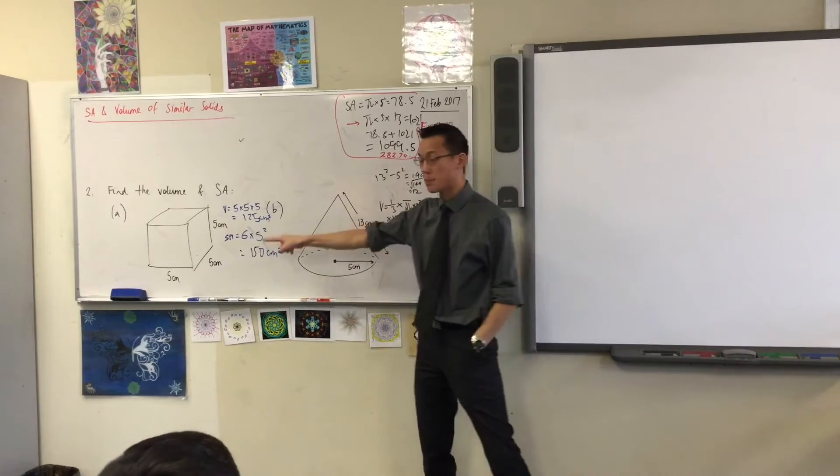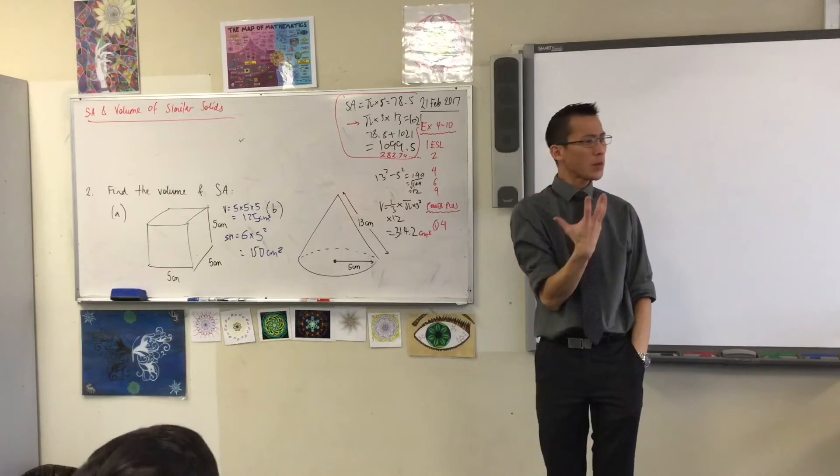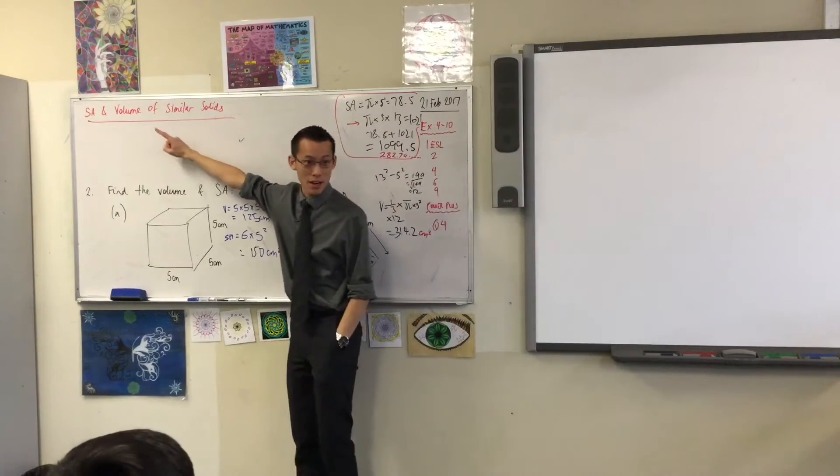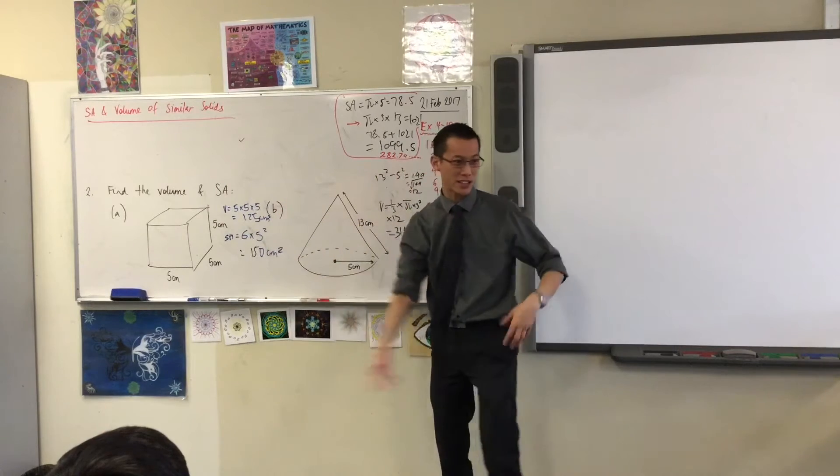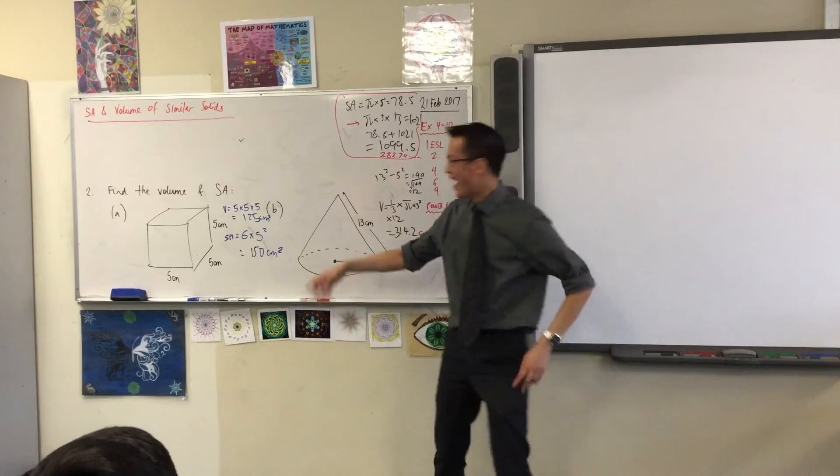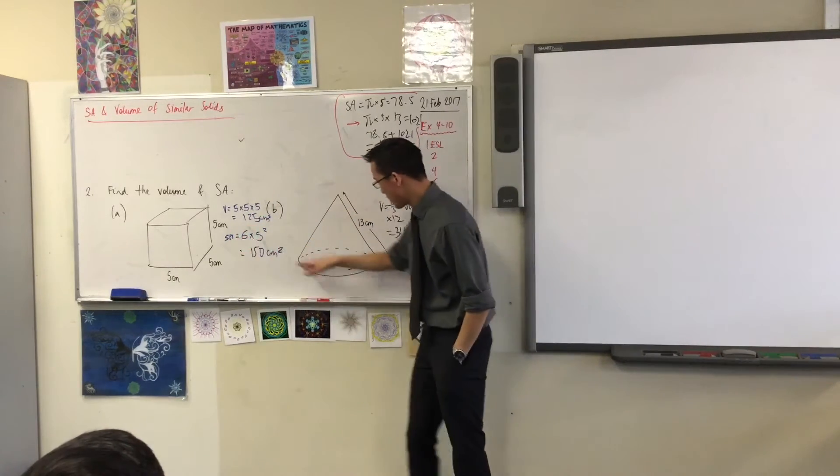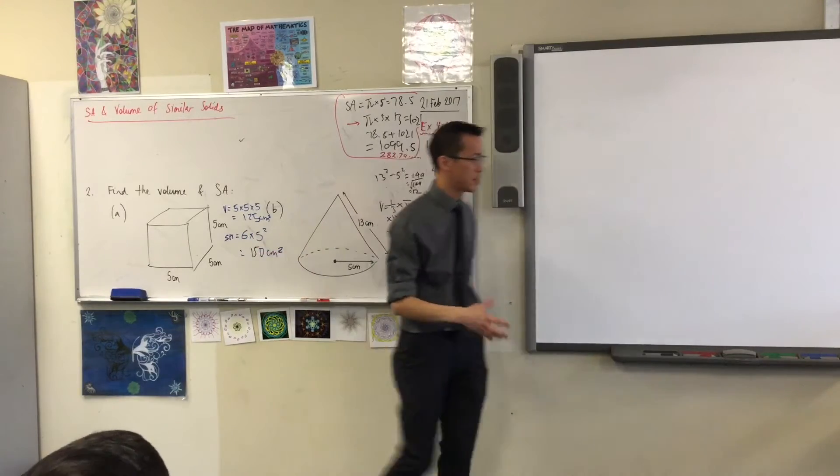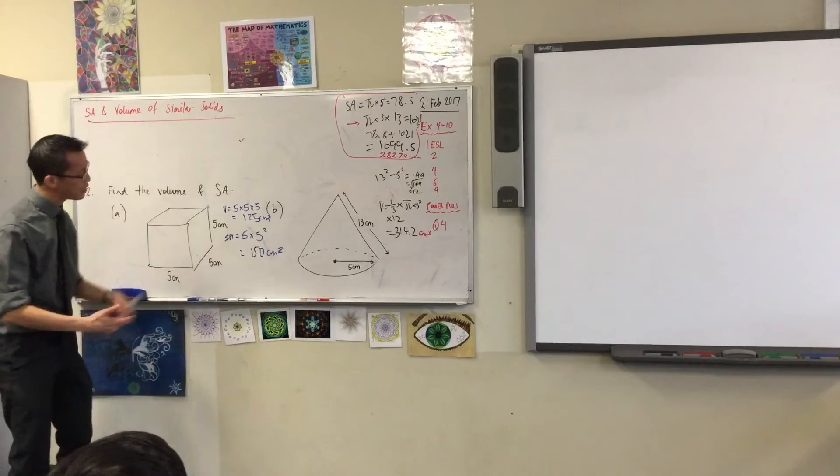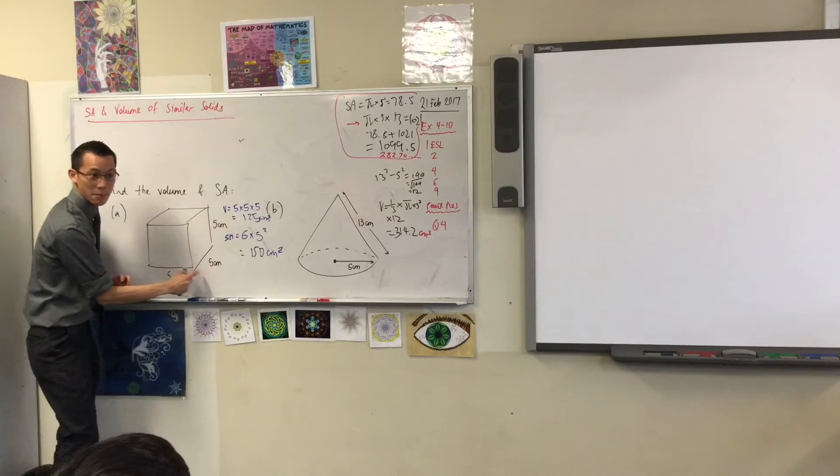Now I actually want to take these particular shapes that you've just worked out surface area and volume for, and what I want you to imagine is an alternate version of both of these. In order for it to be similar, everything about that cube has to stay cube-ish. But we're going to change the size. So it's 5x5x5 at the moment. Let's make an alternate version of this cube that's not 5x5x5, but let's double all the measurements. So let's make it 10x10x10. Can we do that?